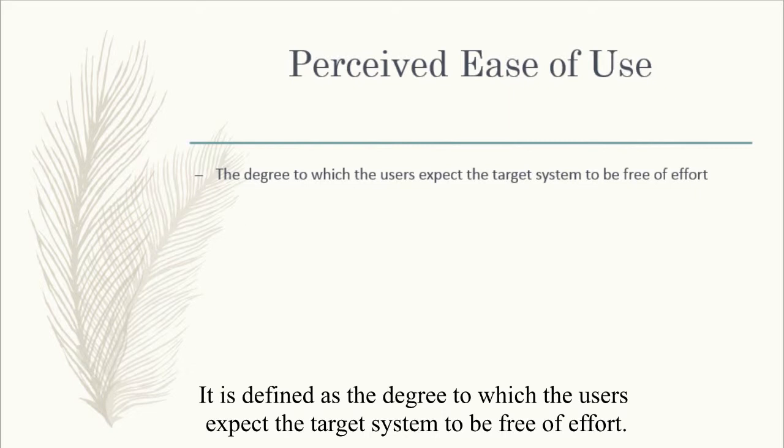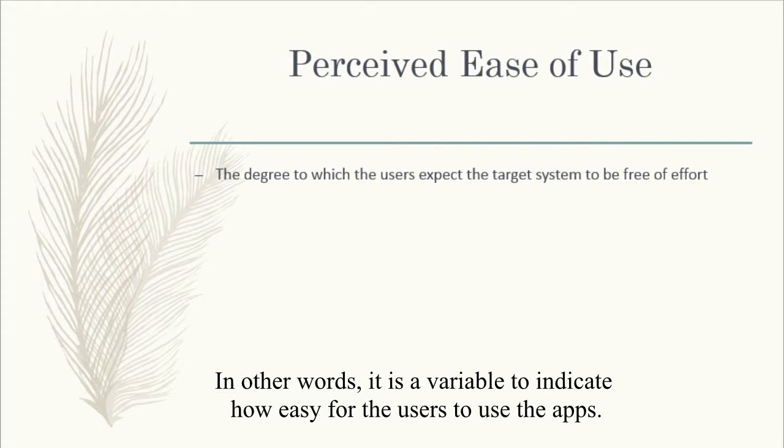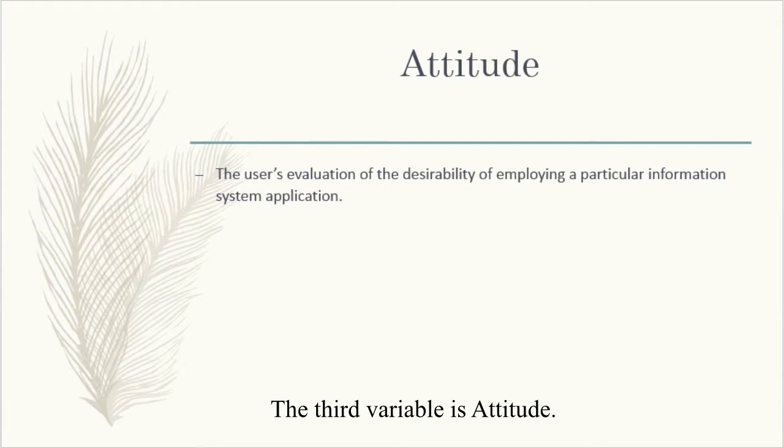The second variable is Perceived Ease of Use. It is defined as the degree to which the users expect the target system to be free of effort. In other words, it is a variable to indicate how easy it is for the users to use the apps.